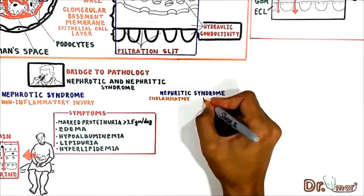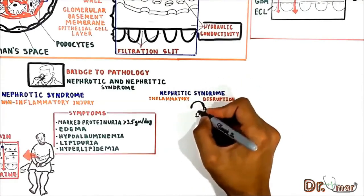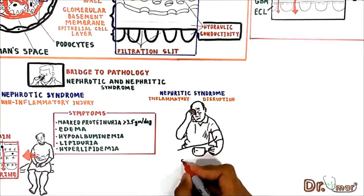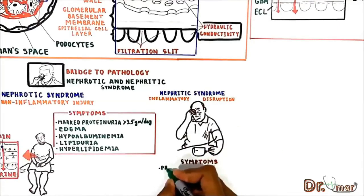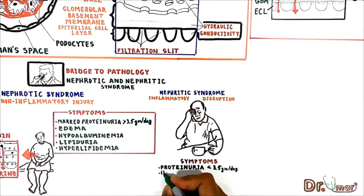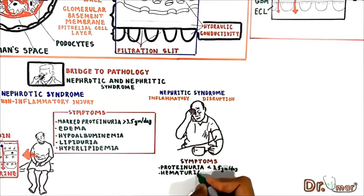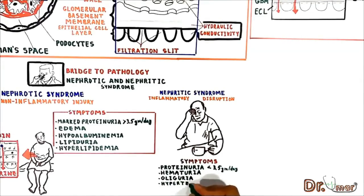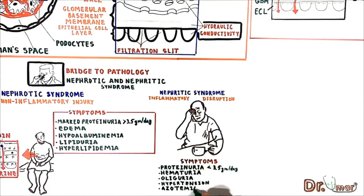In nephritic syndrome there is an inflammatory disruption of the glomerular membrane system. This disruption allows proteins and cells to cross the filtering membrane. The most common clinical signs are proteinuria less than 3.5 grams per day, hematuria due to disrupted membrane, oliguria because inflammatory infiltrates reduce fluid movement across the membrane, hypertension due to inability of the kidney to regulate extracellular volume, and azotemia due to inability to filter and excrete urea.